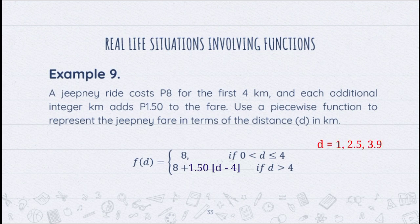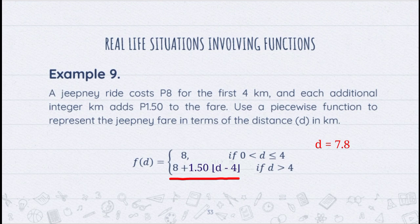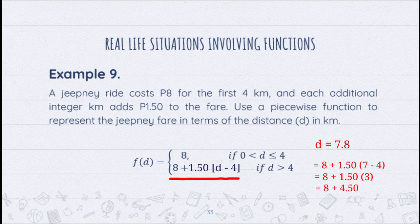For example, if our destination is 1, 2.5, or 3.9 kilometers away, we pay exactly 8 pesos. However, if our destination is 7.8 kilometers away, we use the second function: 8 plus 1.5 times the floor of 7.8, which is 7, minus 4. Seven minus 4 equals 3, and 1.50 times 3 equals 4.50. Therefore, our final answer is 12.50 pesos.